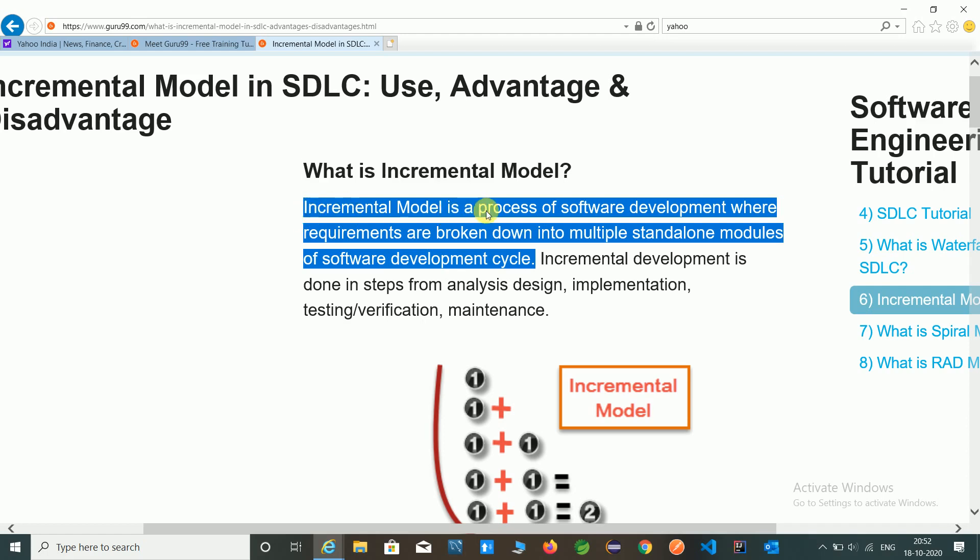Incremental model is a process of software development where requirements are broken down into multiple standalone modules of a software development life cycle. That means an incremental model where we can divide the software into small small models and work on that.